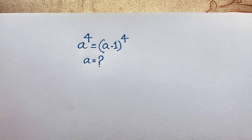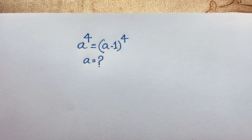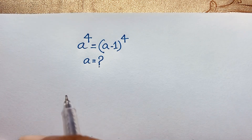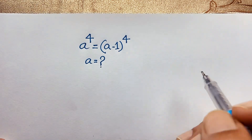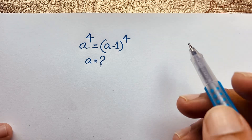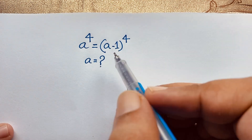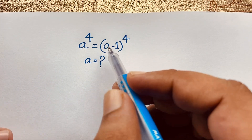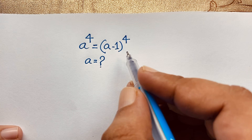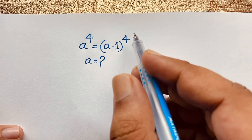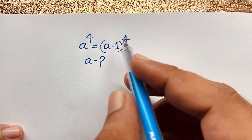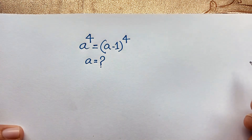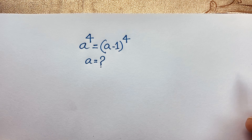Hello everyone, welcome to Rasha's classroom. Today we have solved an interesting maths Olympiad question, which is a to the power 4 is equal to a minus 1 whole to the power 4. a is equal to what? How to solve this interesting maths question?